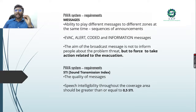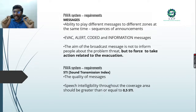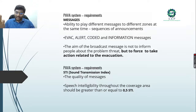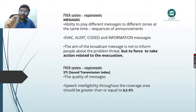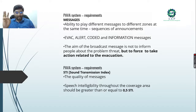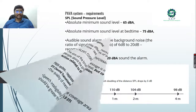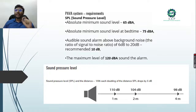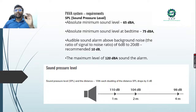The system must have the ability to play different messages to different zones at the same time. Messages can be evacuation, alert, code, or information messages. The aim of the broadcast message is not just to inform people about the problem or threat, but to force them to take action and evacuate. For sound transmission index, the coverage area should be greater than or equal to 0.5. For SPL, the absolute minimum sound level should be 65 dB, bedtime level 75 dB, and the maximum 120 dB for sound alarms.